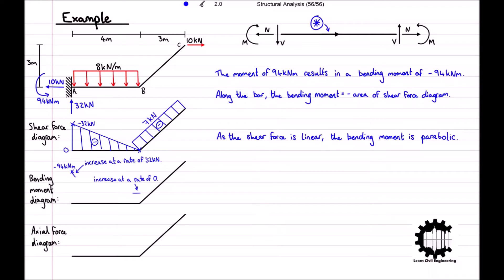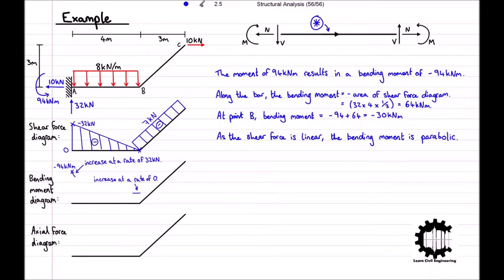As the shear force is linear across the bar, the area below the shear force diagram can be calculated using the formula for the area of a triangle. Between point A and point B the area is equal to 32 times 4 times one half, which equals 64 kilonewton meters. As the bending moment at point A is negative 94 kilonewton meters, the bending moment at point B is equal to negative 94 plus 64, which equals negative 30 kilonewton meters. We then connect the two plots with a parabolic curve.